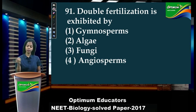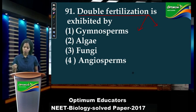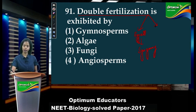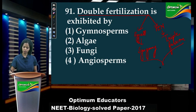Now before I tell you the answer, first I will tell you the meaning of double fertilization. Double fertilization means two male gametes fertilize two different cells. One male gamete fertilizes the egg cell, which is called syngamy. The other male cell fertilizes the secondary nucleus, in a process called triple fusion. When both happen, this is called double fertilization.